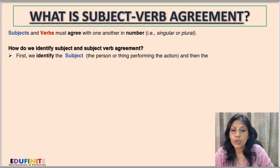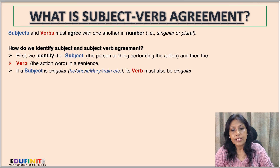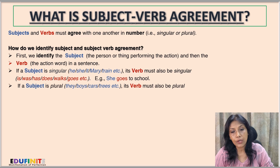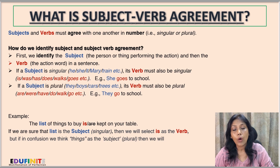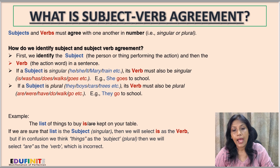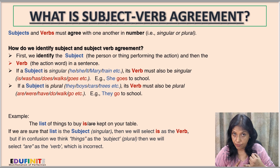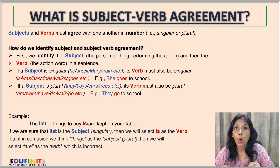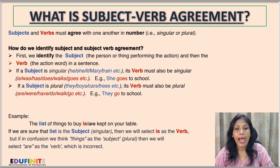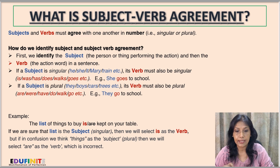What is subject-verb agreement? Subject and verbs must agree with one another in number — that is, singular or plural. We identify the subject, which is the person or thing performing the action, and then the verb, which is the action word in the sentence.